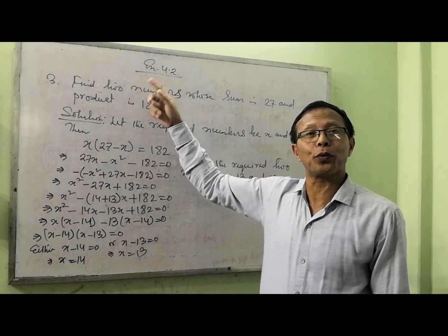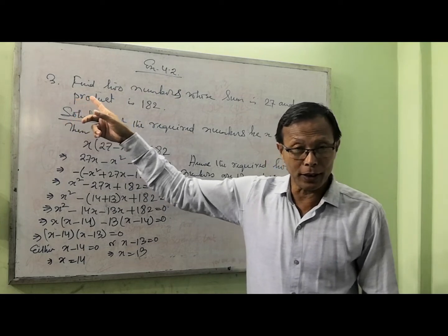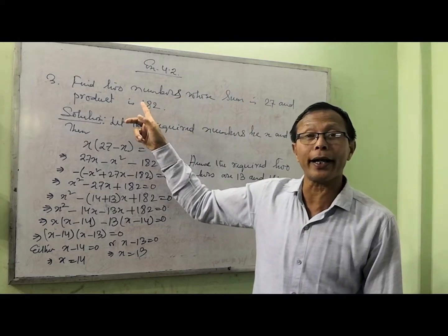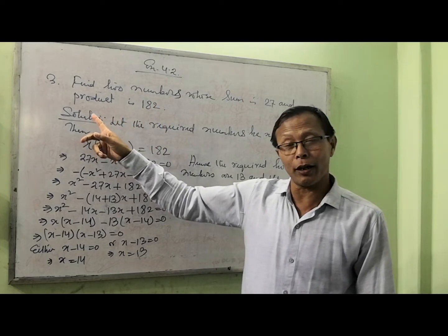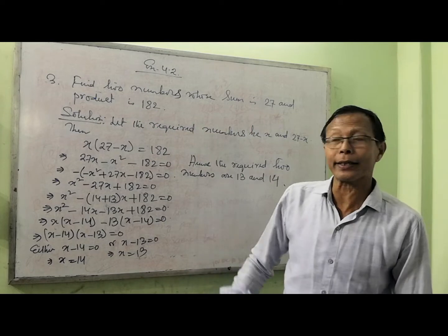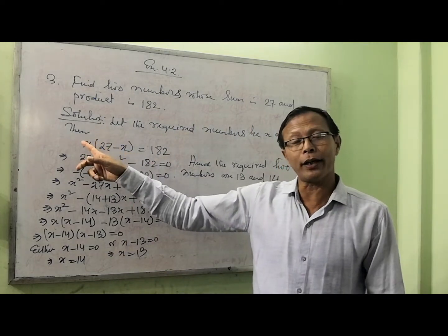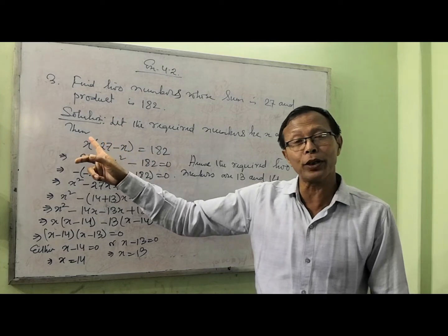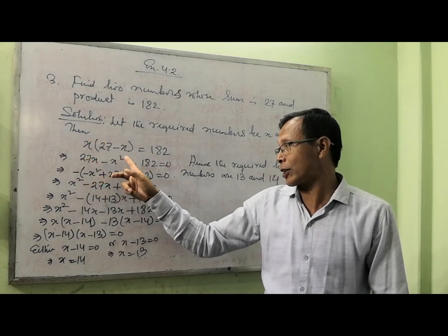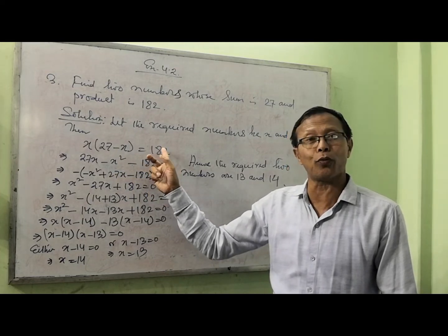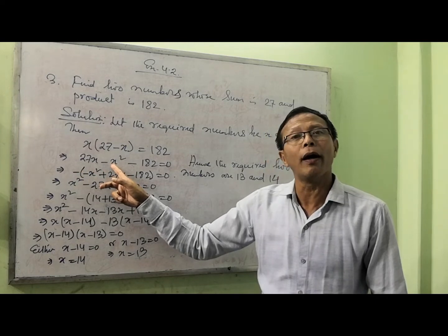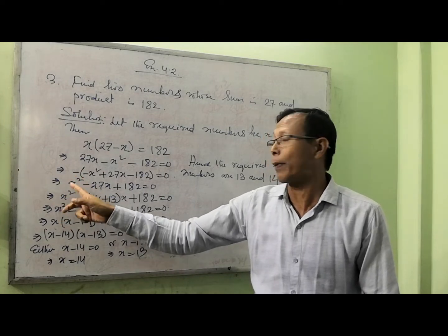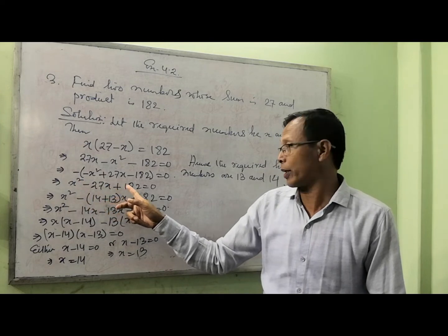Now I am going to continue with exercise 4.2, question number 3. Find two numbers whose sum is 27 and product is 182. Let the two numbers be x and 27 minus x. Then we can write: x times (27 minus x) equal to 182. Removing the bracket: 27x minus x squared equal to 182. Bringing 182 to the left and multiplying all terms by minus 1 gives x squared minus 27x plus 182 equal to 0.